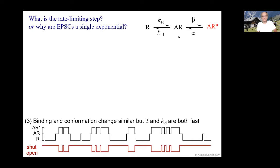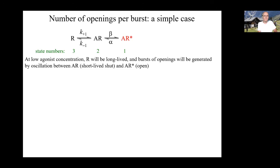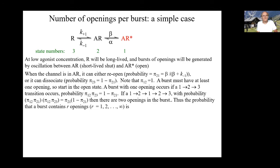If these rates are both fast then the concentration of the intermediate will be low; it'll be short-lived and in terms of occupancies that means it has a low occupancy. In this simple case we can work out straight away the distribution of the number of openings per burst. Suppose that we're working at a low agonist concentration — that means the resting state will have a long life and bursts of openings will be generated by oscillation between these two states. After it's opened there's a good chance that it'll reopen rather than dissociate.